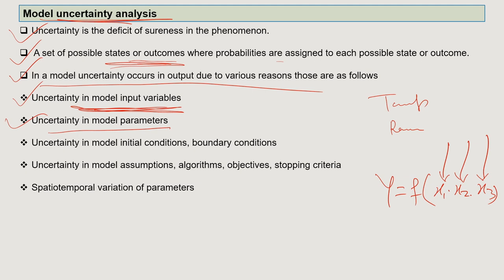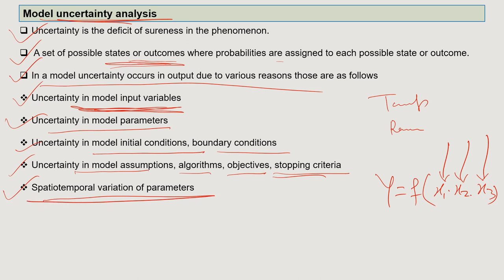Other sources of model uncertainty include: uncertainty in model parameters; uncertainty in model initial conditions and boundary conditions — if these have uncertainty, the outcome will too; uncertainty in model assumptions, including the algorithms chosen, the objectives, and the stopping criteria — the point at which you stop the model run; and spatiotemporal variation of parameters. It is very difficult to completely eliminate these uncertainties — we have to live with them.